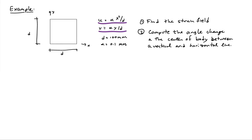Let's ask the question of, first of all, finding what the strain field in the body is. We're given the displacement field, so all we have to do is find the strain field. And then let's also calculate the angle change at the center of the body between a vertical and horizontal line.